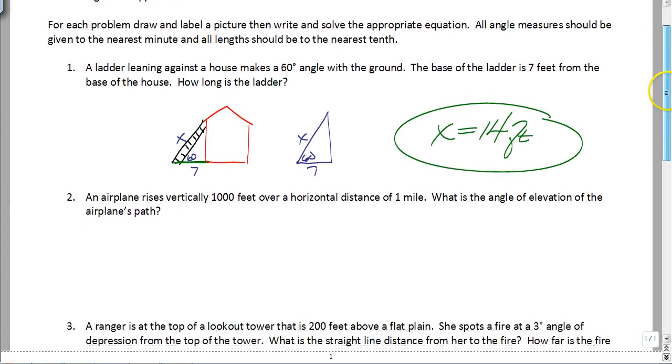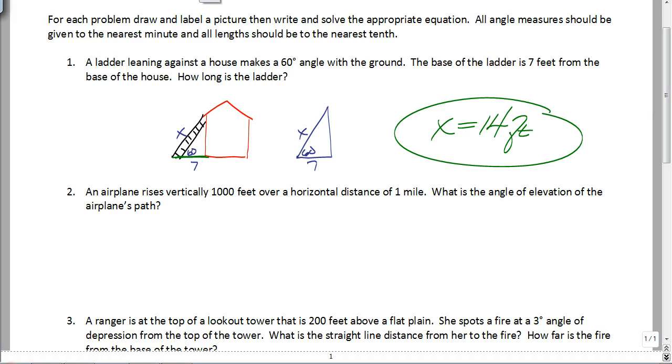Number two, an airplane rises vertically 1,000 feet over a horizontal distance of one mile. Okay? This is pretty easy as well. So we got an airplane path, and we'll just make our little airplane go like that. And of course, you've got to draw an airplane. I mean, how can this be a fun little word problem if we don't actually draw an airplane? And it said that it rose vertically 1,000 feet over a horizontal distance of one mile. Well, do you think you can write one mile and then have 1,000 feet? I don't think so. So we're going to do 5,280 feet because that's how many feet there are in a mile.